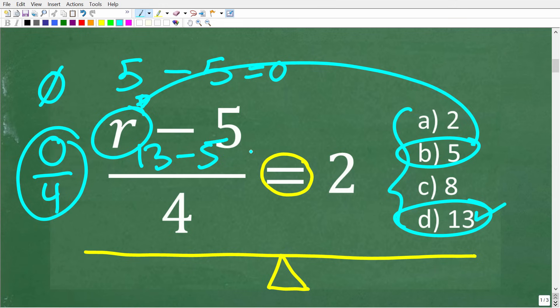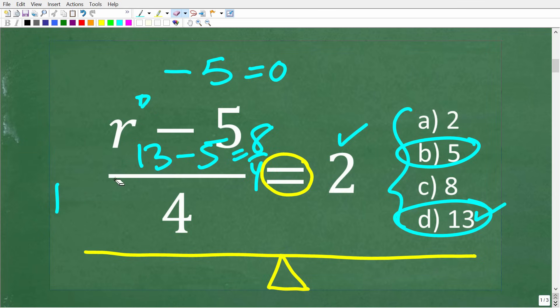Because 13 minus 5 is what? Well, that is 8, and 8 divided by 4 is, in fact, 2. Okay, so this is why everybody should have gotten this problem right, even if you didn't understand the algebra.